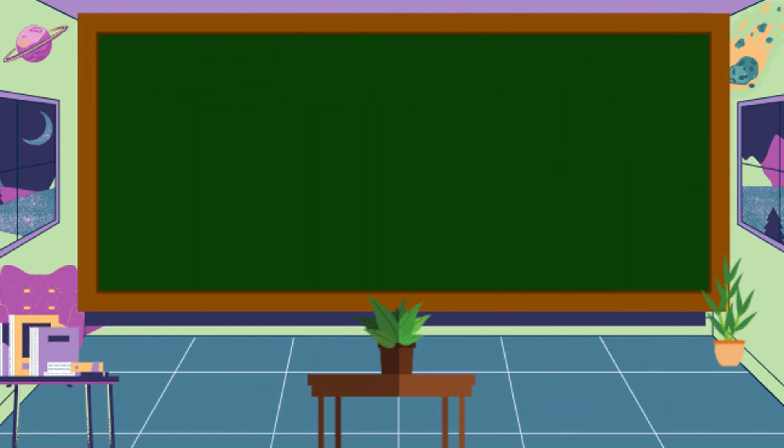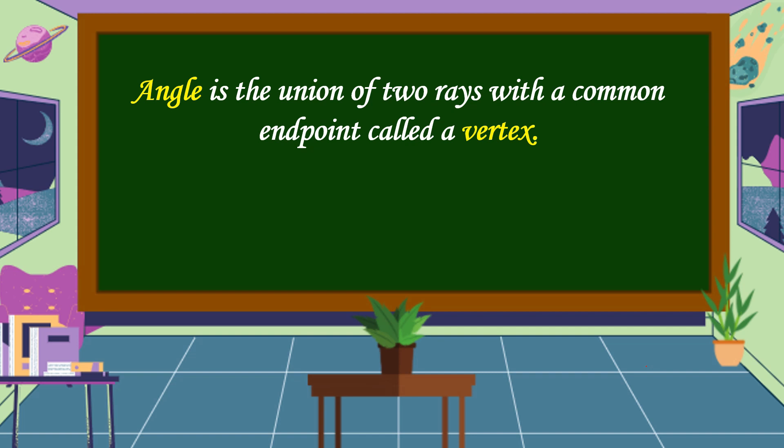What is an angle? Angle is the union of two rays with a common endpoint called a vertex.